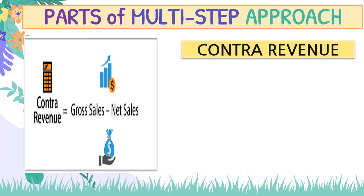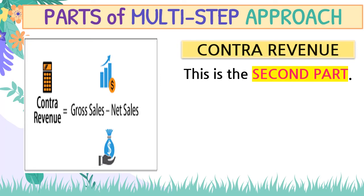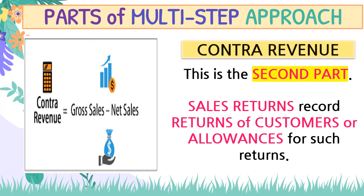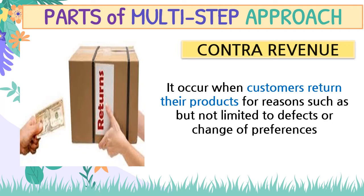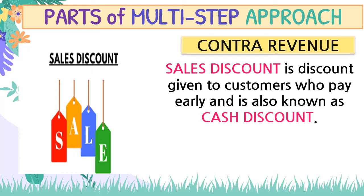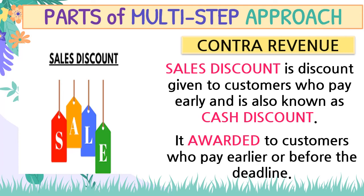Then we also have contra-revenue, which is the second part. This includes sales returns — returns by customers or allowances for such returns — which we deduct from sales. It occurs when customers return their products for reasons such as, but not limited to, defects or change of preferences. Sales discount is a discount given to customers who pay early, also known as a cash discount, awarded before the deadline. That is also under contra-revenue.